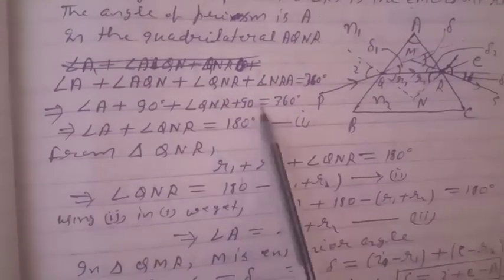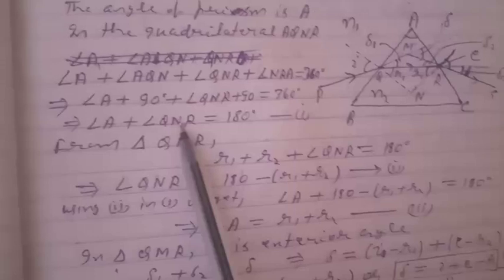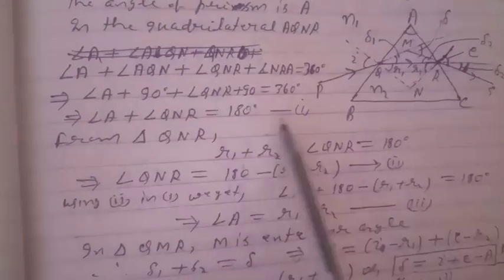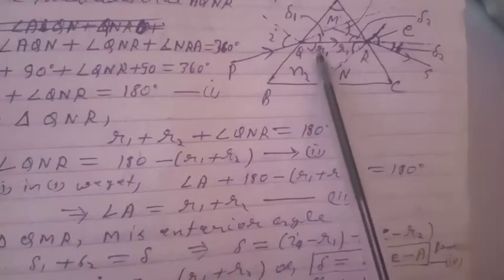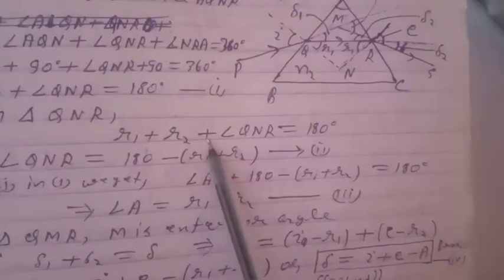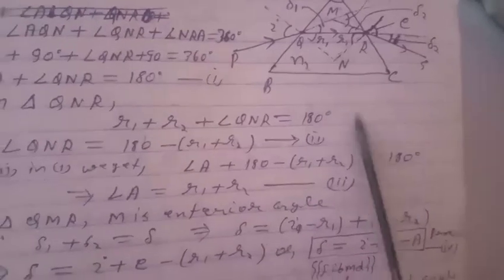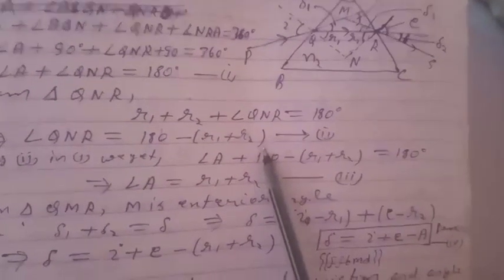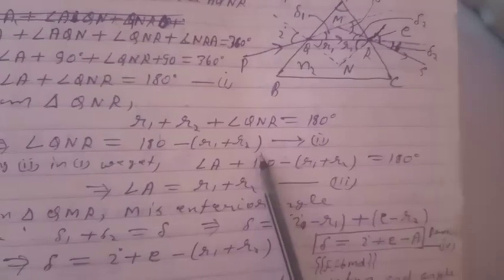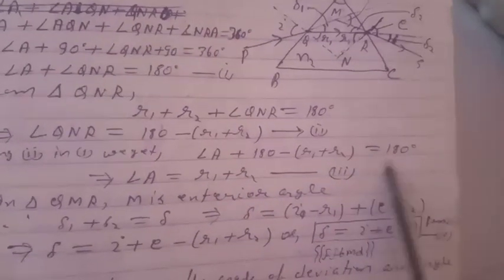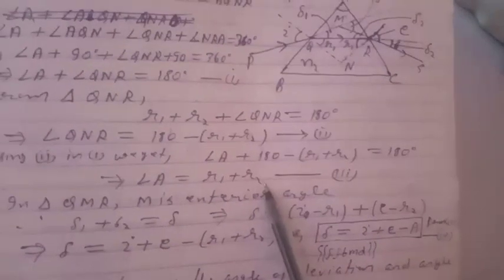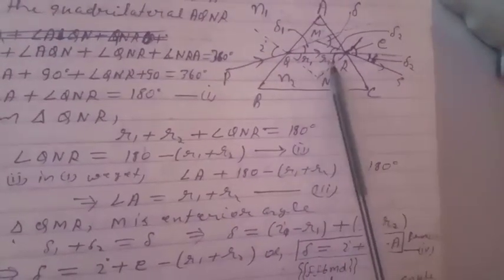From triangle QNR, if this angle is R1 and this angle is R2, then R1 plus R2 plus angle QNR equals 180°, hence QNR equals 180 minus (R1 plus R2). Using this in equation 1, we get angle A plus 180 minus (R1 plus R2) equals 180, which gives angle A equals R1 plus R2.